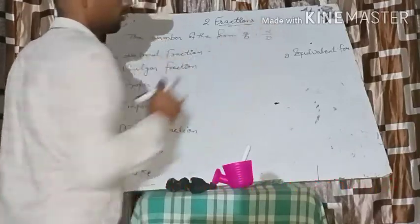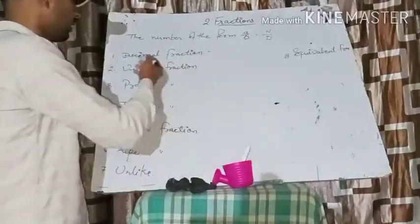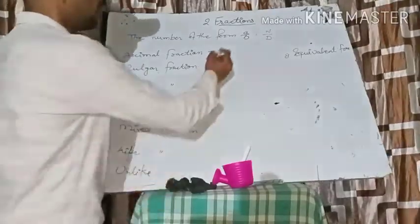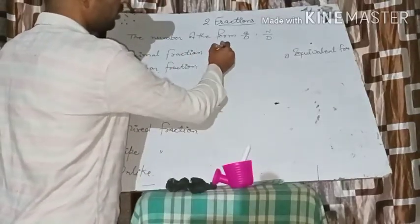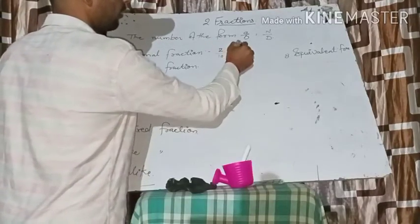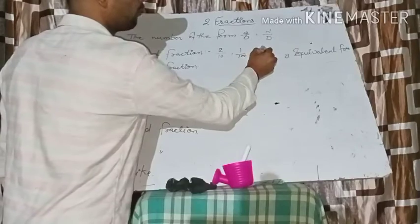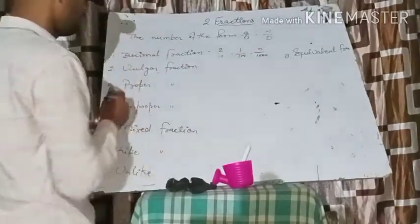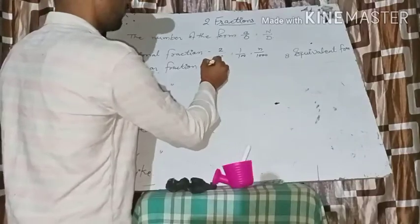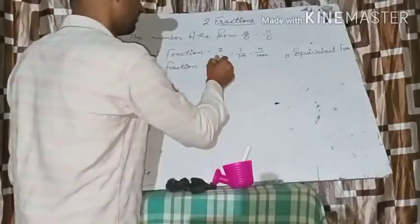The next point is types of fractions. The first type is decimal fraction — in a decimal fraction, the denominator will be ten or a multiple of ten. For example: two upon ten, one upon hundred. In a vulgar fraction, the denominator is other than ten or a multiple of ten, like two upon five, three upon six, four upon seven.